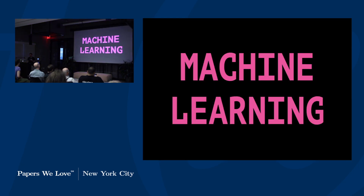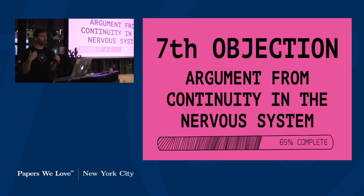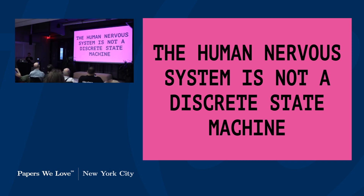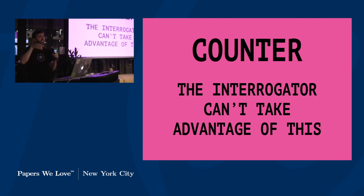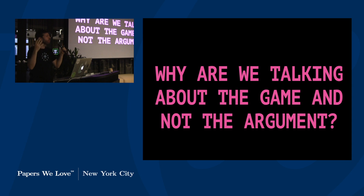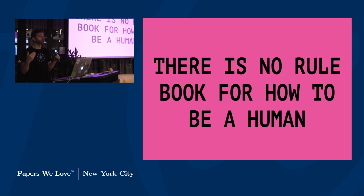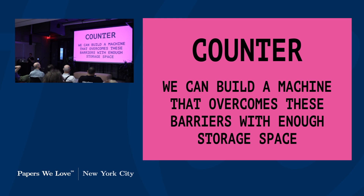With enough storage space, we have seen machines surprise us and come to new conclusions we were not expecting. He then adds the argument from continuity in the nervous system — that how humans think and how our brains work is probably not a discrete state. His counter is that the interrogator can't take advantage of this anyway. He also sets up a new imitation game where the machine pretends to be an analytical engine. He then goes back to the argument for informality of behavior — that there is no rule book for how to be a human — and the same counter applies: we could build a machine that overcomes these barriers with enough storage space.